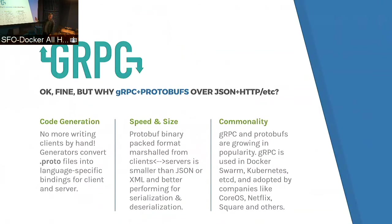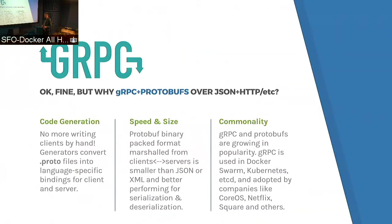The binary format marshaled from clients to servers is better performing than JSON or XML. In terms of commonality, gRPC is used in many places you already know about: the Docker SwarmKit project uses gRPC, as do Kubernetes, etcd, CoreOS, Netflix, and Square — all have adopted gRPC for their client-server RPC API models.